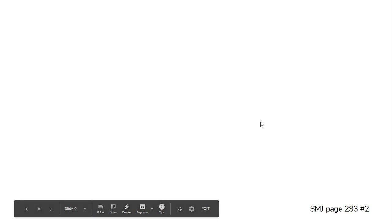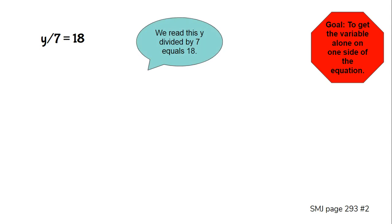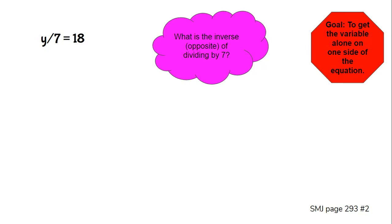Let's work on number two from page 293. Our goal is to get the variable alone on one side of the equation. We read this problem: y divided by 7 equals 18 — remember, the fraction bar is also division. I have y divided by 7 on one side, and the inverse of dividing by 7 is multiplying by 7. It's an equation, so whatever we do to one side, we do to the other. We multiply each side by 7. On the left, dividing by 7 and multiplying by 7 cancel out, leaving just y.